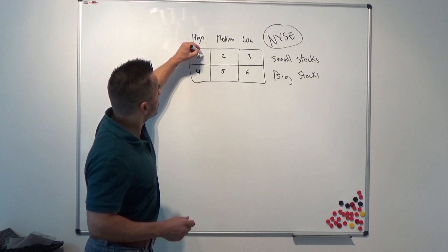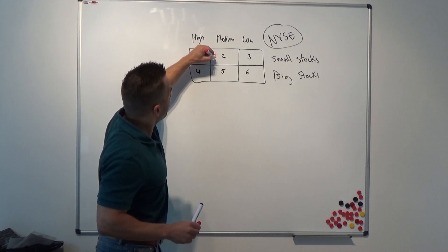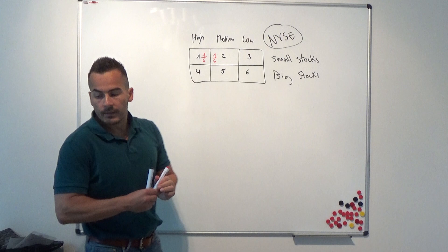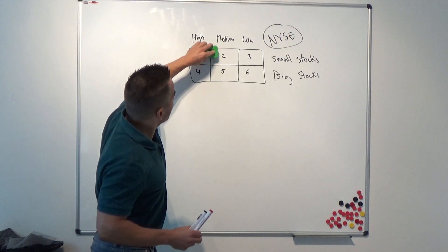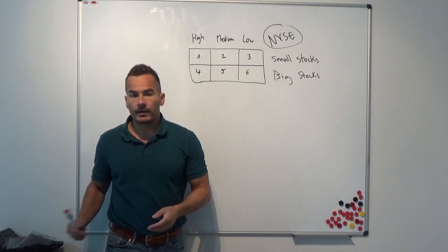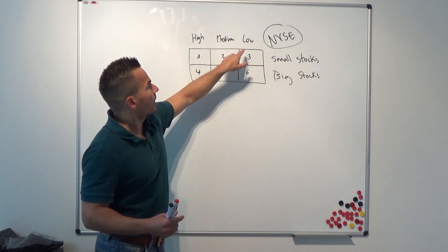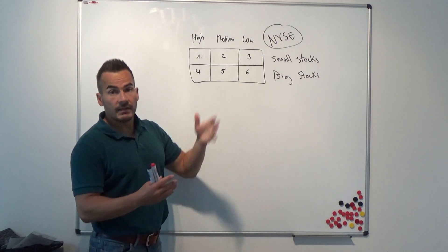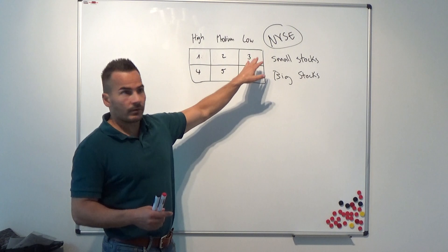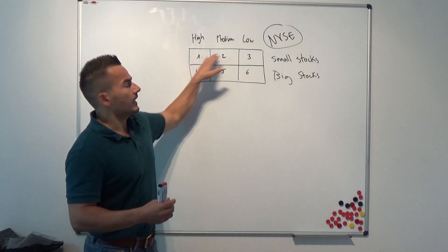But they write in the paper, if you read it carefully, that they use independent sort. Independent sort means that they allocate a stock into the group, let's say low and small stocks, if they fulfill both criteria at the same time. So that means you will not have 16.6% here in each of these groups, but this will vary. You have a different number of stocks in each of these groups.